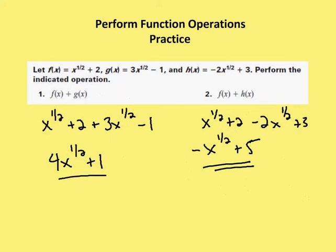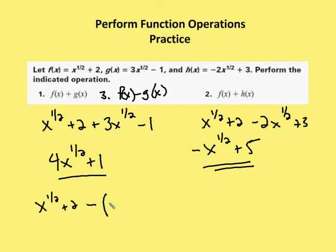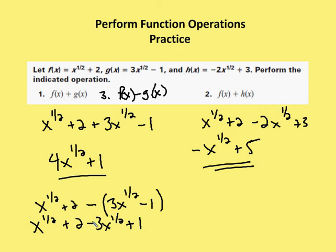I want to go back and subtract: let's make number 3, f of x minus g of x. I have f of x equal to x to the 1 half plus 2, and now I'm going to subtract g of x. I need to put this in parentheses because I have to distribute the negative value. Minus 3x to the 1 half minus 1. As I distribute the negative sign, I get x to the 1 half plus 2 minus 3x to the 1 half plus 1. Now, x to the 1 half minus 3x to the 1 half gives me negative 2x to the 1 half, and plus 2 plus 1 gives me plus 3.